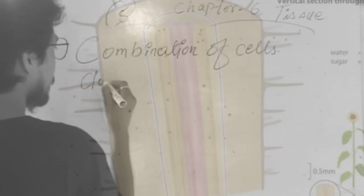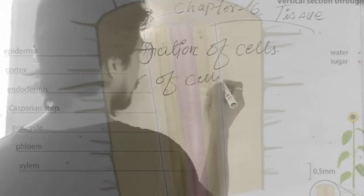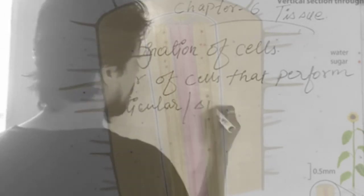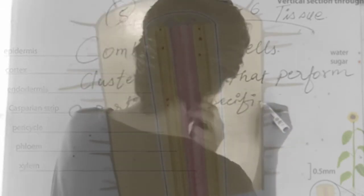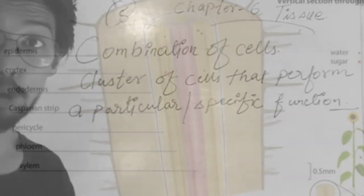A tissue is a combination of cells, or we can say a cluster of cells, that perform a particular or specific function. Different types of tissue are present in your body.